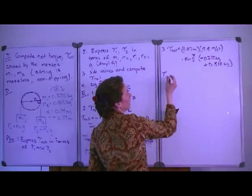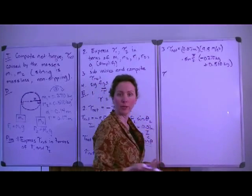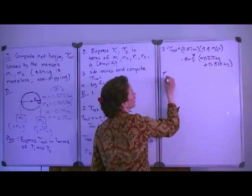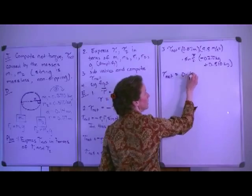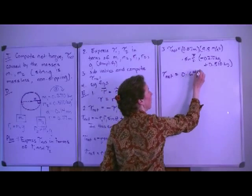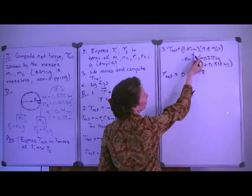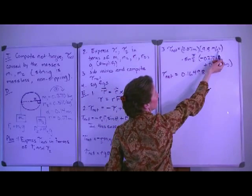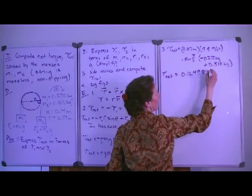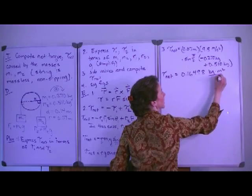And with careful computation, recall that the sine of pi over 2 or the sine of 90 degrees is 1. And so the net torque is equal to 0.16498. And let's look at our units. We have meters times meters, so meters squared over seconds squared, times kilograms. So kilograms times meters squared over seconds squared.